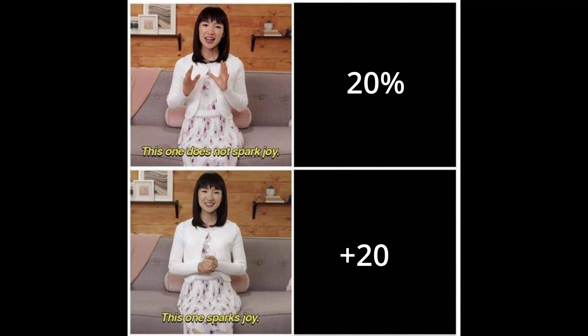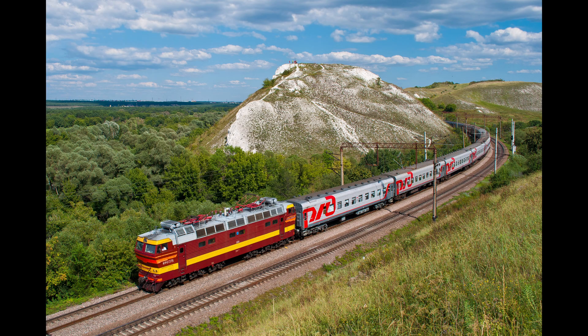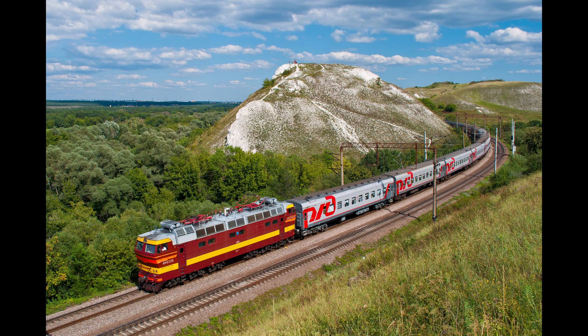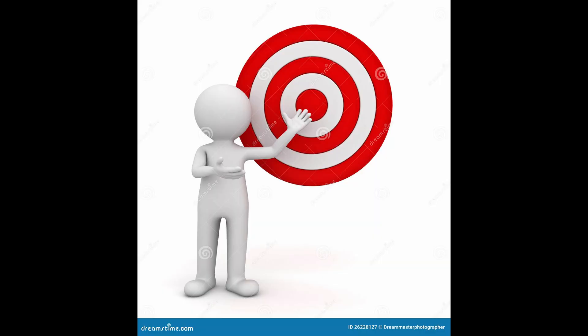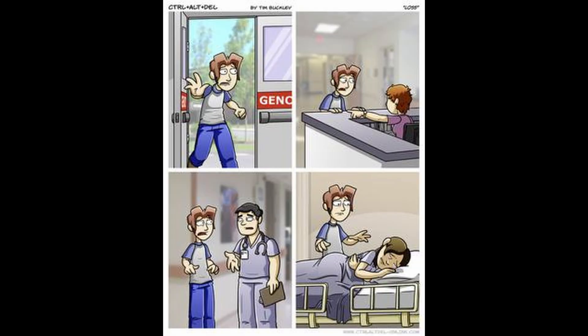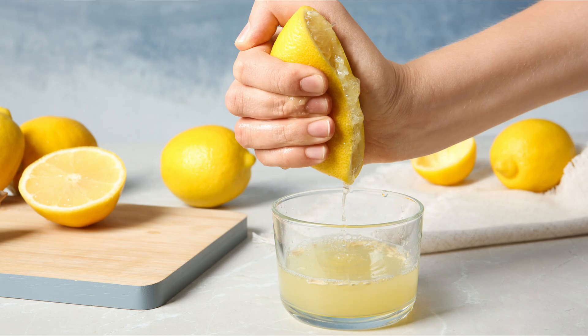Our next step is to train the model. When we train, we have to avoid two things: overfitting and underfitting. To check for these we use two parameters: accuracy and loss. Accuracy is a simple percentage of whether the predicted word is the correct one or not. Loss is the distance between the predicted words and the actual words present in the data.